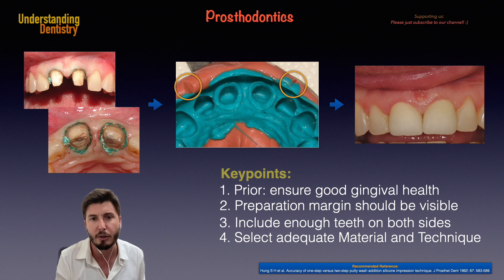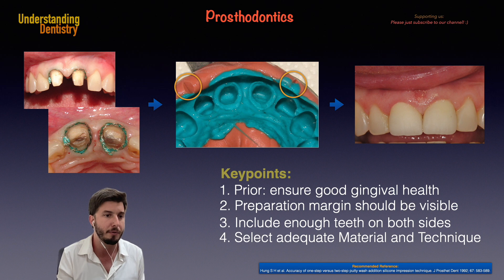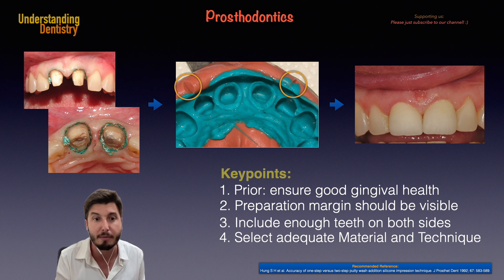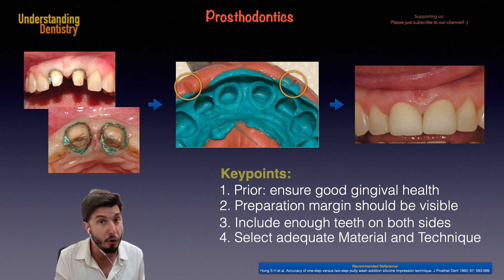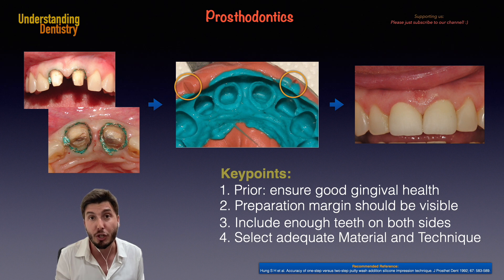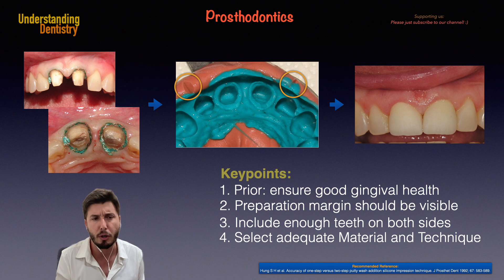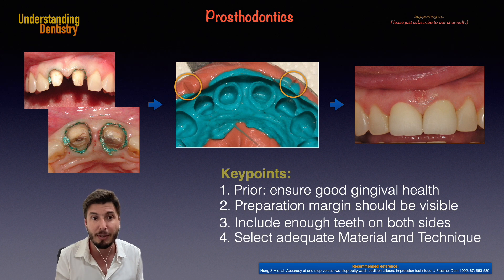Then you can rehabilitate the patient — here you can see temporary crowns — and if the impression is very good, you can proceed with the definitive crowns or try in the copings, giving you several other options. That leads us to the fourth key point: select the adequate material and technique. Use the manufacturer instructions to make sure you manipulate the material correctly. Apply all the prosthodontics theory you've learned to manipulate the material in a good time — not too slow and not too fast — and you will have the integrity of the dental tissues in your impression, as you can see in this image.